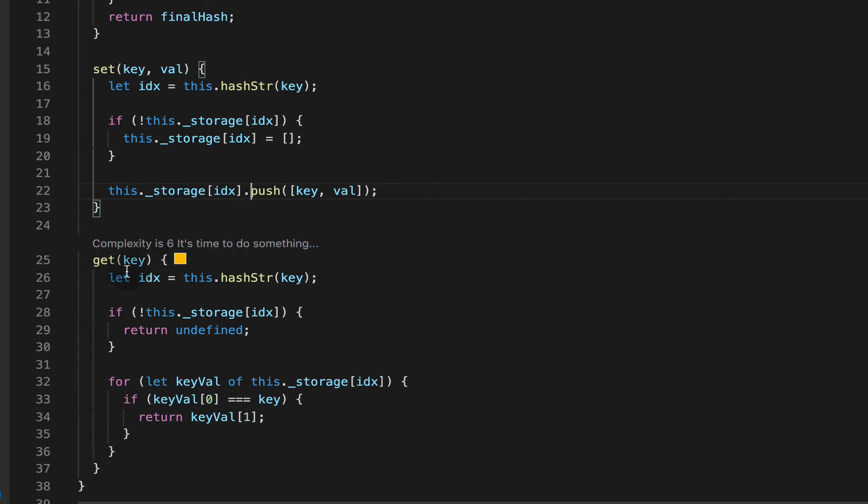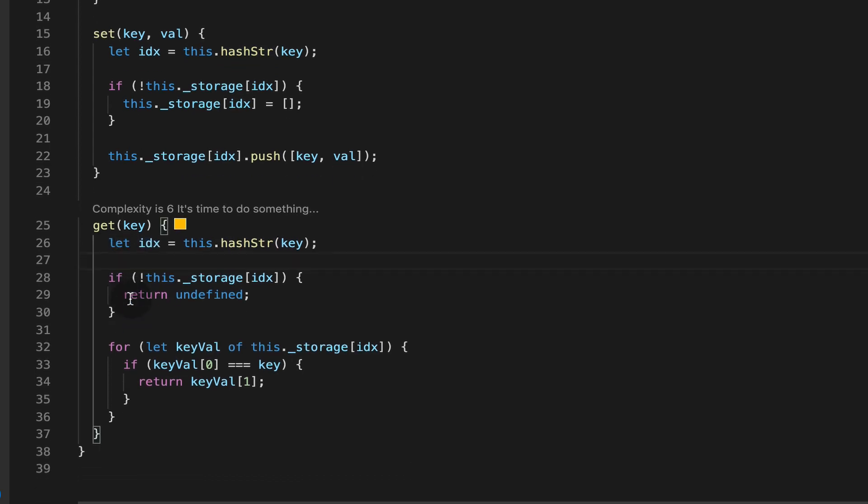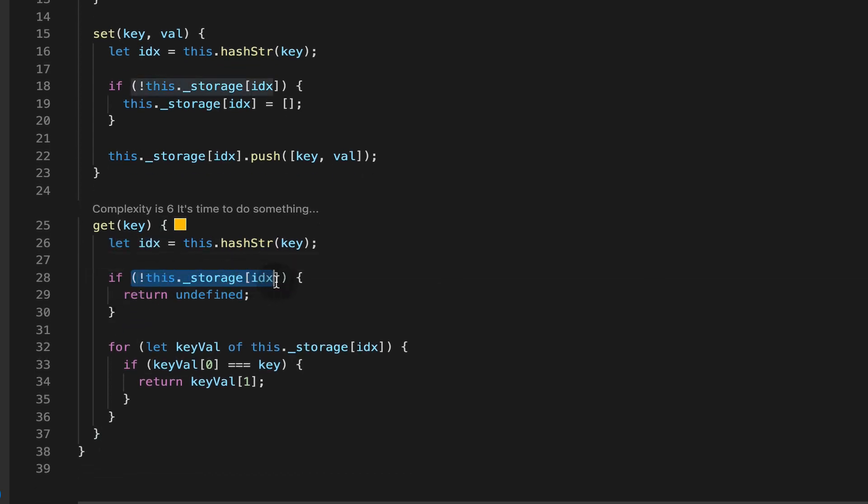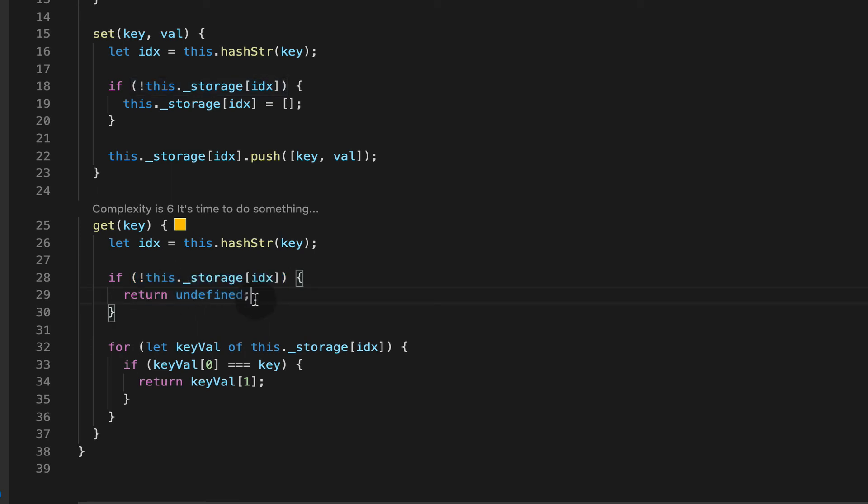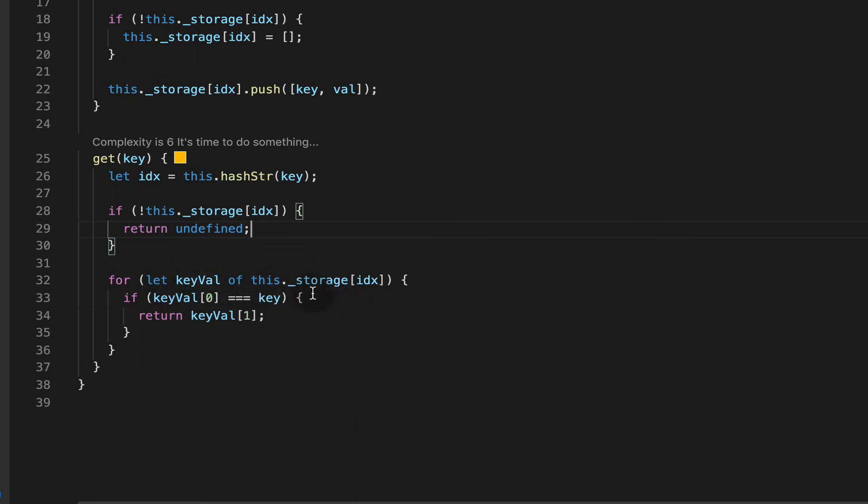Then on the flip side to retrieve a value we pass in the key to get. Get will then use the same hashing function to compute the proper bucket index. If nothing is found at that bucket index in our internal storage array we return undefined. But if we do have something there then we'll loop through the array at that spot and look for the key that corresponds to the one we're trying to get and return that value.